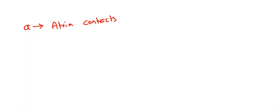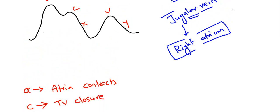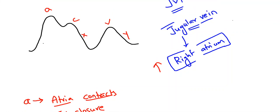We get the A wave when the atria contracts. As the atria contracts, the pressure in the atria will be high. This results in the A wave, which is of the highest peak.